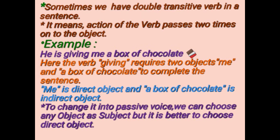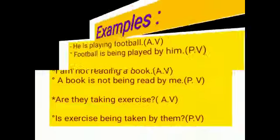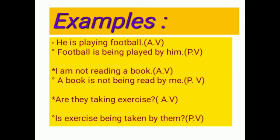We can choose any object as subject, but it is better to choose the direct object. 'A box of chocolate' is our direct object to the verb. Now the first example is an assertive sentence: 'He is playing football.' Here 'football' is the object in the active voice.